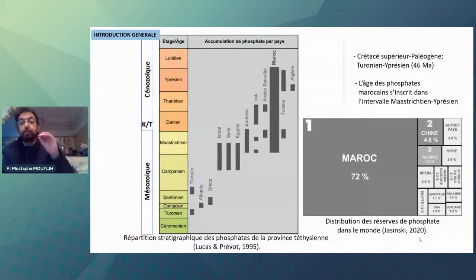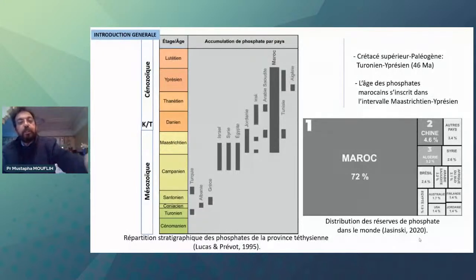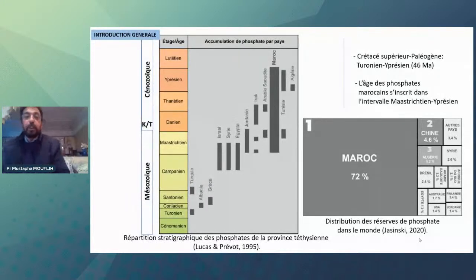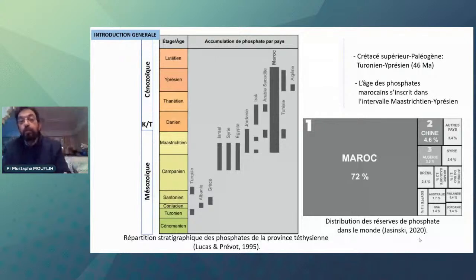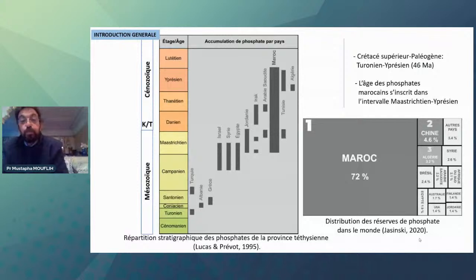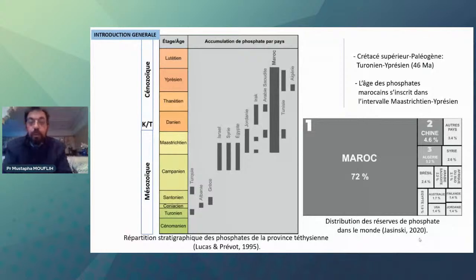La province téthysienne comprend des gisements en Israël, Égypte, Jordanie, et dans tout un ensemble de pays. Le Maroc, parmi tous les gisements du monde, possède des réserves constituant 72% des réserves mondiales selon les données de 2020 — ce qui en fait la première ressource de phosphates au monde.